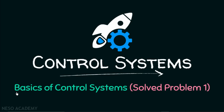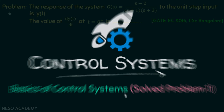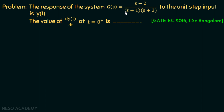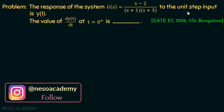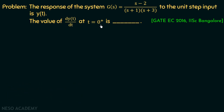In this presentation, we are going to discuss problem number 1 on basics of control systems. The response of the system G(s) = (s-2) / [(s+1)(s+3)] to the unit step input is y(t). The value of dy/dt at t equal to 0+ is to be determined.